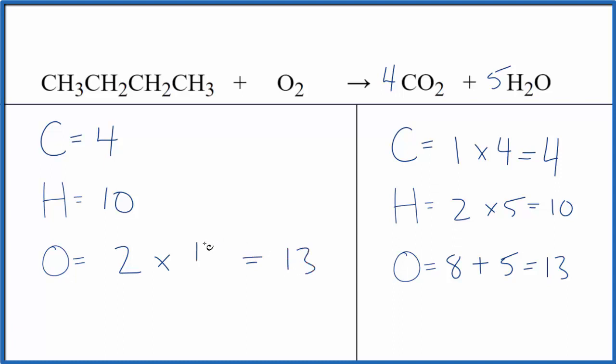We could say 2 times 13 over 2. That would equal 13 because the 2s would cancel out. So we could put 13 over 2 here in front of the oxygen.